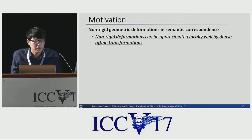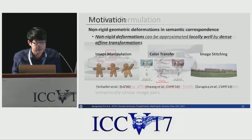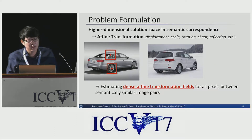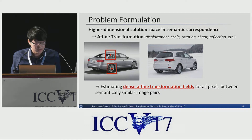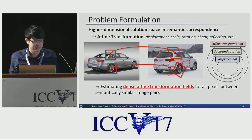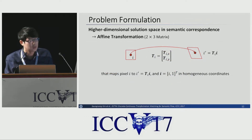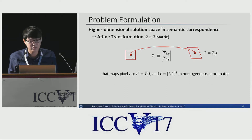Nonrigid deformation can be locally well approximated by a dense affine transformation field, as you can see here. So in this paper, we reformulate the dense correspondence estimation for semantic images. We reformulate it as estimating a dense affine transformation field for all pixels between semantically similar image pairs — a 2×3 matrix for each pixel.